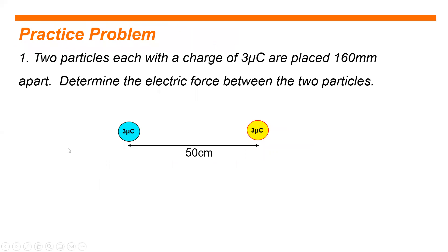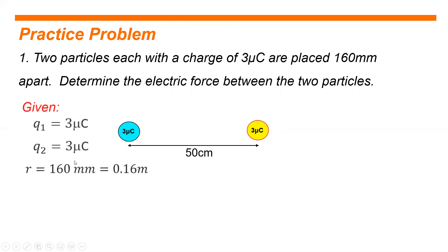Let's have practice problem number one. Two particles, each with a charge of 3 microcoulombs, are placed 160 mm apart. Determine the electric force between the two particles. The given: q₁ equals 3 microcoulombs, q₂ equals 3 microcoulombs, and the separation distance is 160 mm, which is equivalent to 0.16 meters.